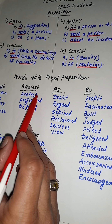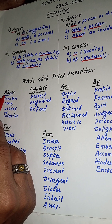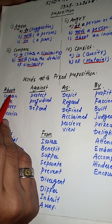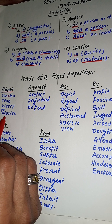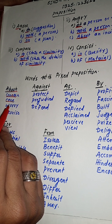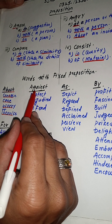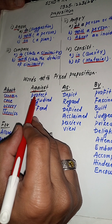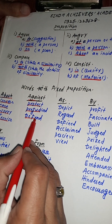Now we have the verbs which take fixed prepositions. For the preposition ABOUT: concern about, care about, worry about, theorize about. For the preposition AGAINST: protect against, prejudiced against, defend against.